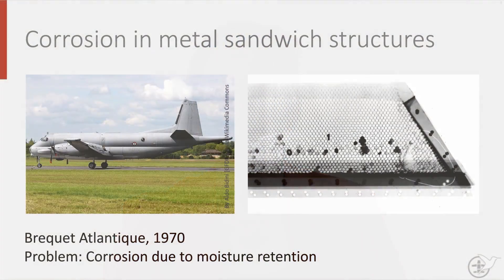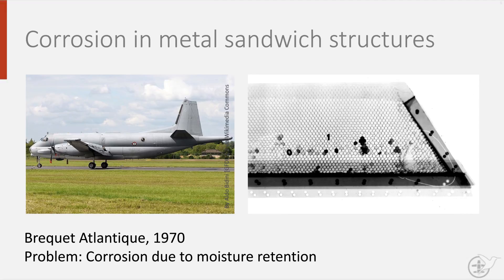To highlight the issue of corrosion, we take a look at a French maritime patrol aircraft, the Breguet Atlantique. It developed substantial corrosion issues due to water retention in its aluminium honeycomb, as can be seen in the x-ray photo taken in that period. The moisture remained trapped inside and increased the rate of corrosion.